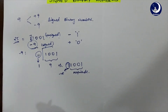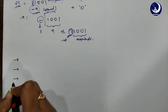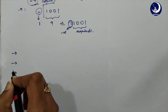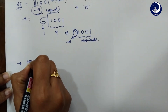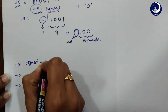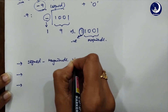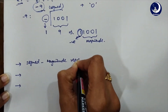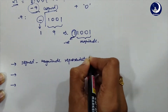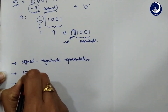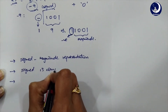People have come up with many notations to differentiate between them, but the most commonly used are three types: signed magnitude representation, signed one's complement representation, and signed two's complement representation.